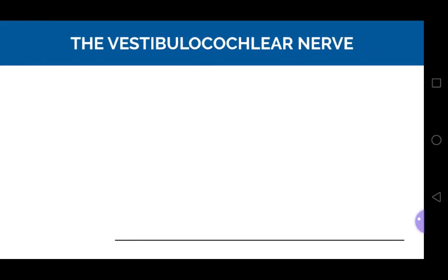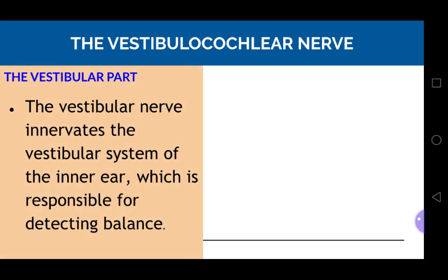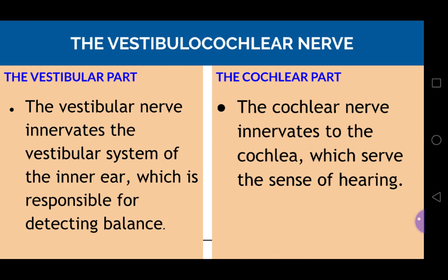The vestibular nerve is a part of the vestibulocochlear nerve, also known as the eighth cranial nerve, and it has two parts: one is the vestibular part and the other is the cochlear part. These two parts have entirely different functions. The vestibular nerve innervates the vestibular system of the inner ear, which is responsible for detecting balance, whereas the cochlear part innervates the cochlea, which serves the sense of hearing.